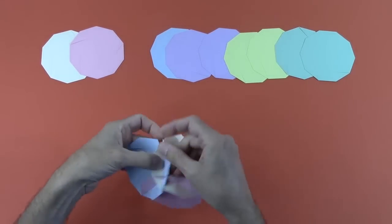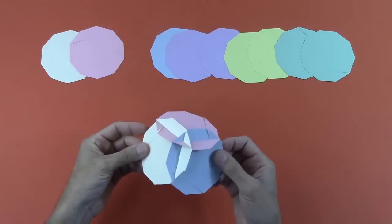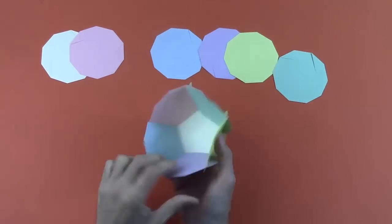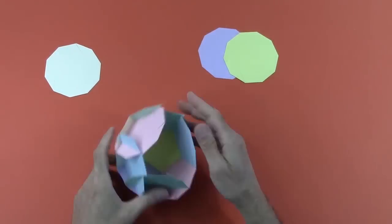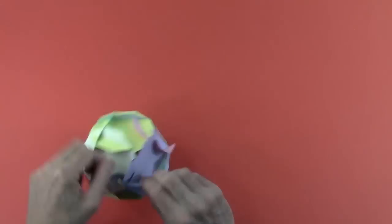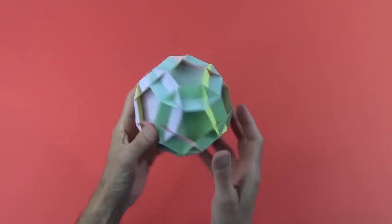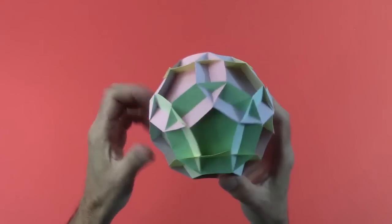When you get the overlap right, there's a small three-colored triangle in the center of the three-way connection. You want to be sure you have that little triangle at every three-way connection. When complete, this is an extremely solid ball with no glue or tape required to hold it together.